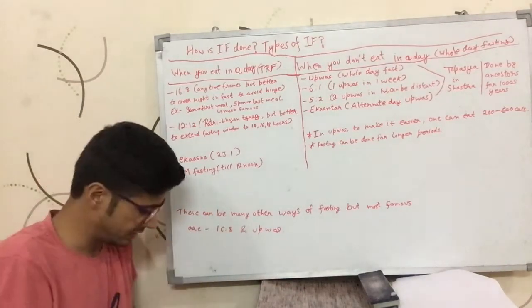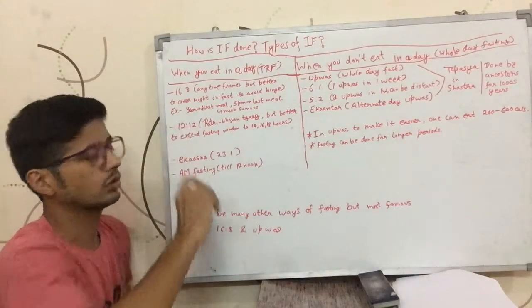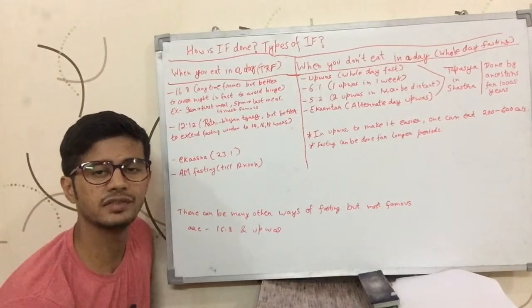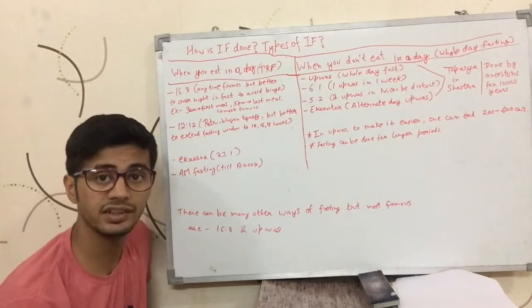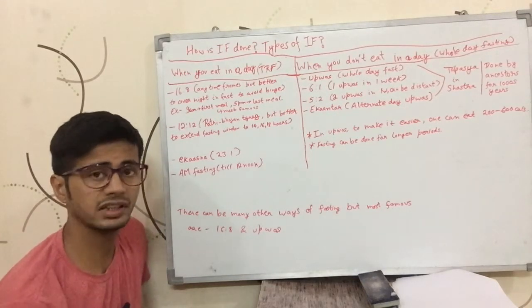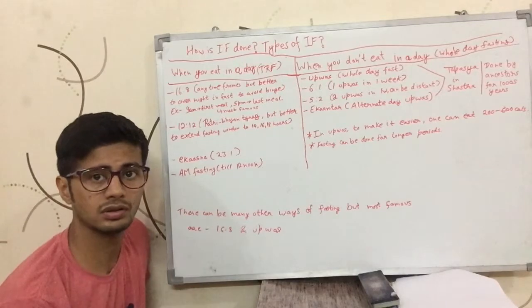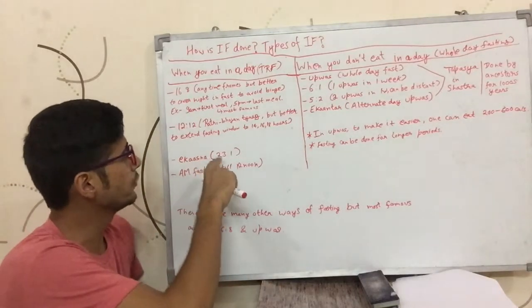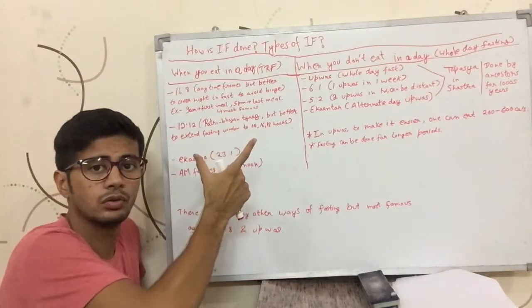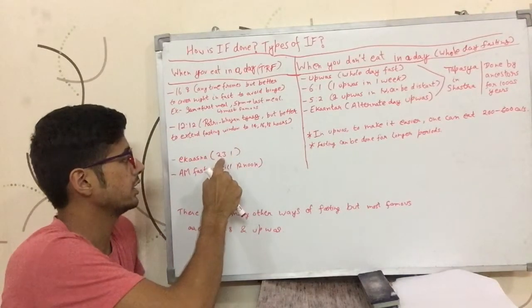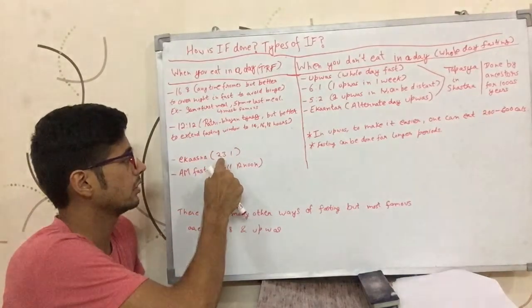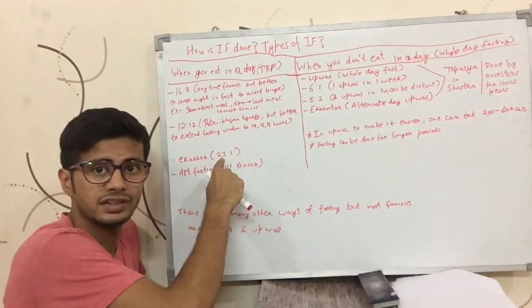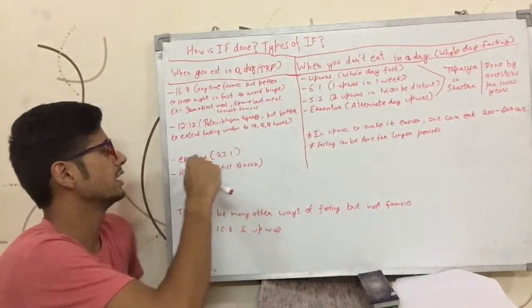But it is advisable that you keep your fasting window to more than 12 hours—like 13, 14, 15, 16, maybe 17 or 18 hours—because the bigger the fasting window, the better it is. And if you take your fasting window to a really high level, like 23 hours of fasting and just one hour of eating, then it becomes what our ancestors used to call Ekasana.